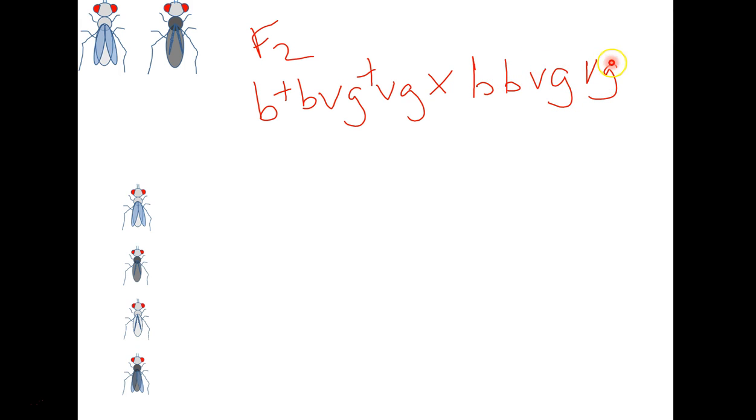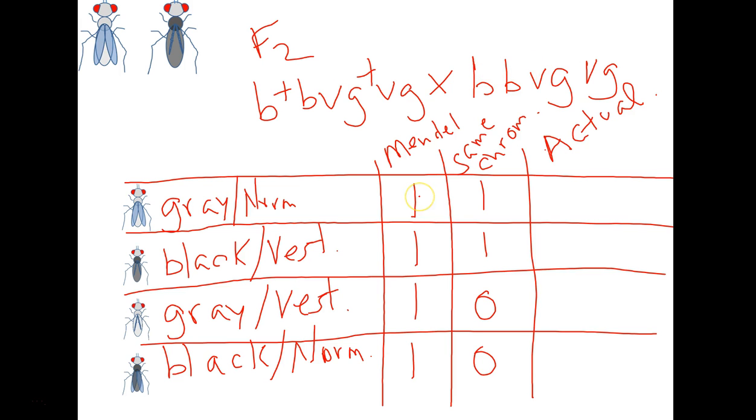If the genes were not linked, we would see a ratio of one to one to one to one from independent assortment. If this was on the same chromosome, each would look like at least one of the parents, gray normal or black vestigial, and you would have zero with a recombination of each.